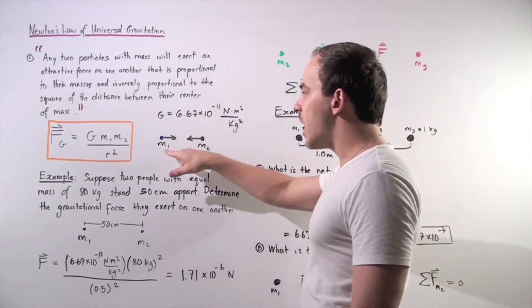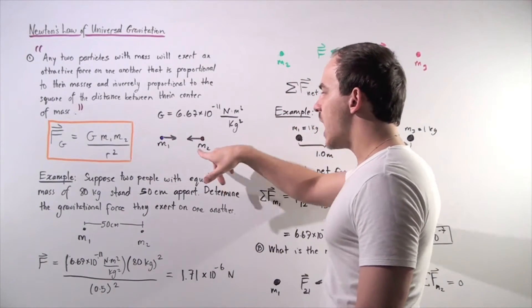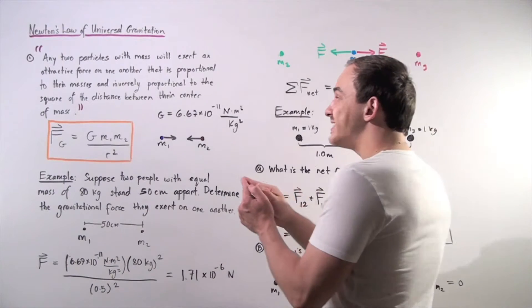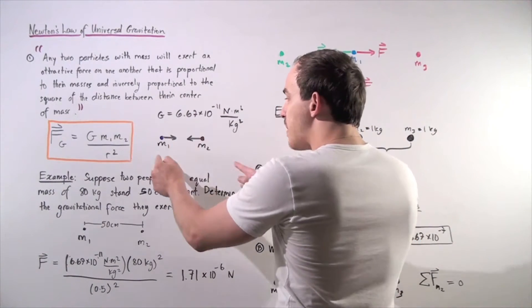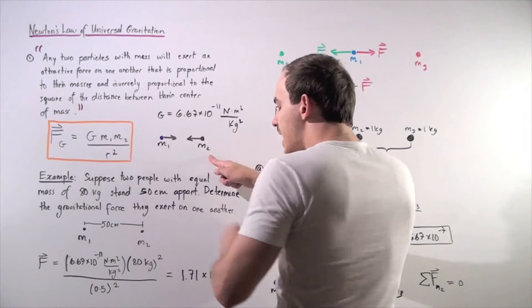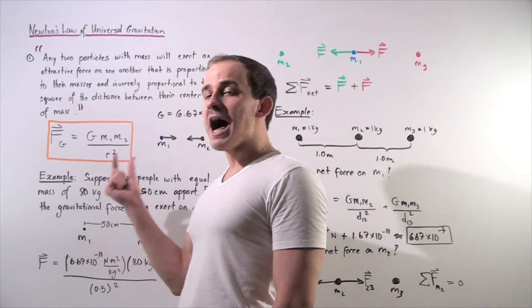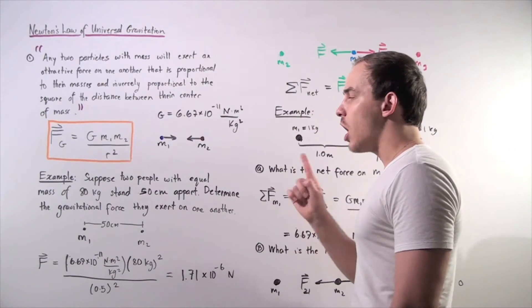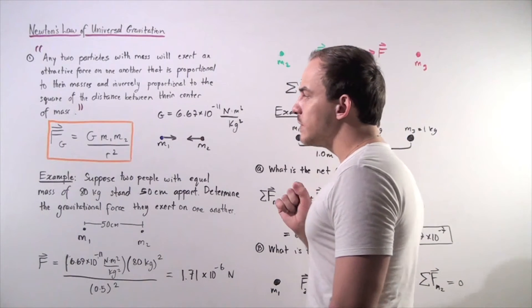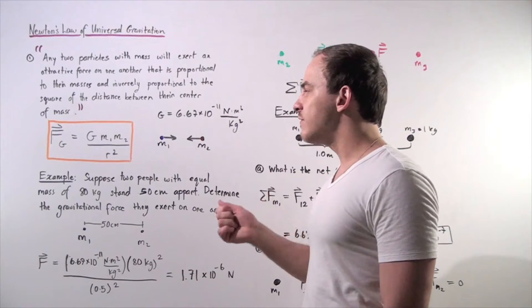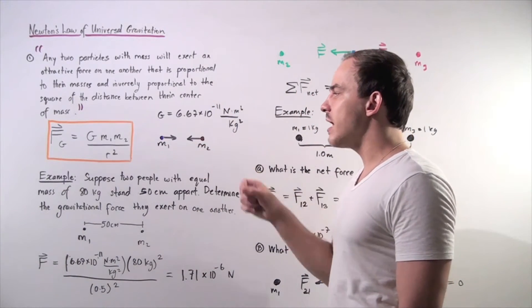Let's suppose we have object one with mass one and object two with mass two and they're separated. Their distance between the center of mass of these two objects is r. Now we can use the following formula to solve for the magnitude of the force: G times mass one times mass two divided by the distance between them squared.